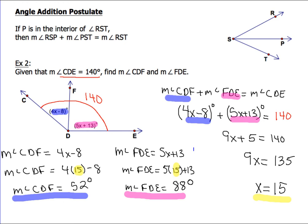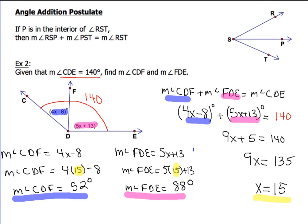We'll use a similar process to find the value of angle FDE by simply substituting 5x + 13 for that angle. Substituting 15 in for x, performing our arithmetic, and coming up with 88 degrees.